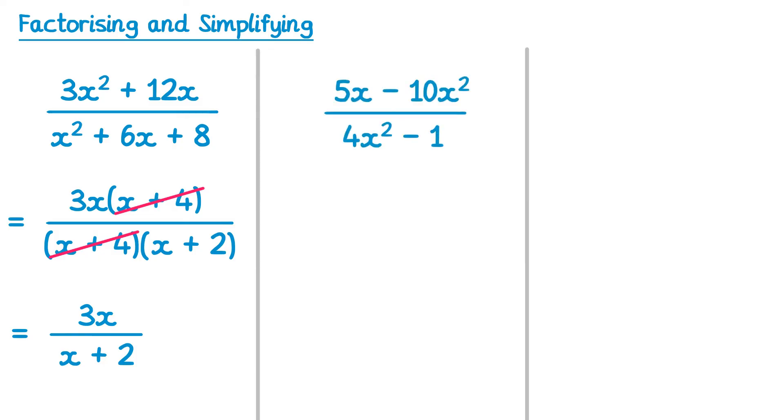What about this one here? In this case we can factorise the top into a single bracket, 5x is the common factor, so you'd get 5x(1 - 2x), and on the bottom we have the difference of two squares, (2x + 1)(2x - 1).